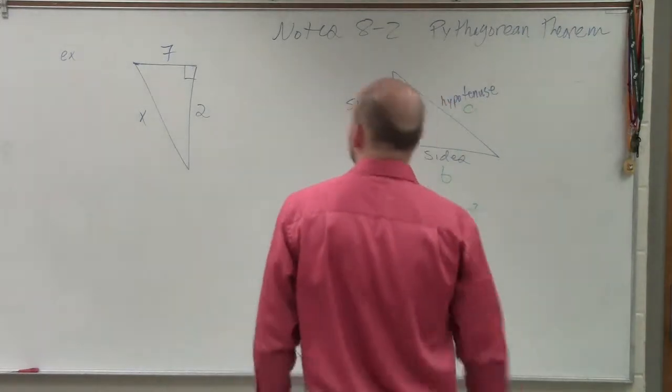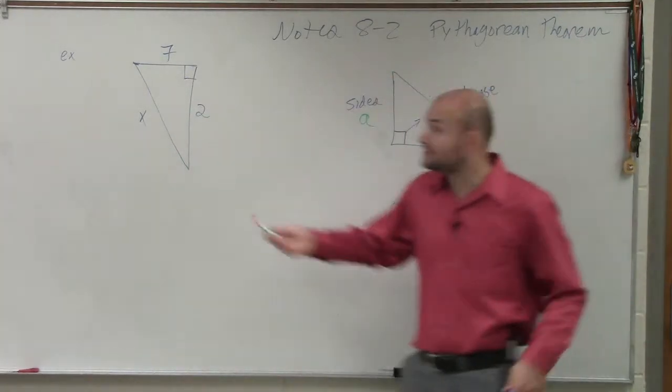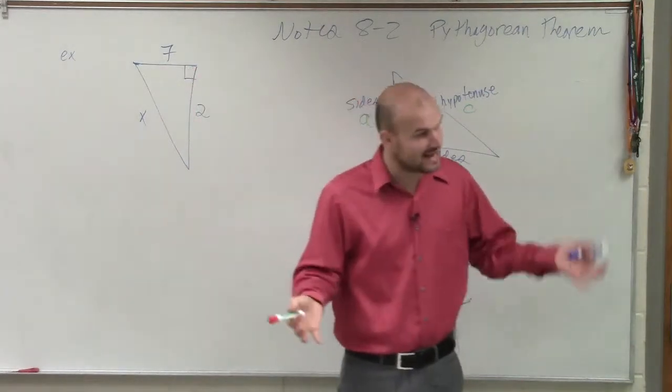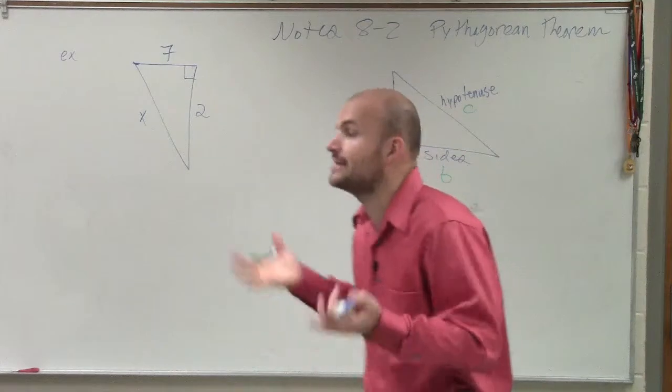OK, so what we have is we have a triangle. It's not written just like this one. However, we do notice that it has a right angle. So therefore, I know it's a right triangle. And since it's a right triangle, I know I can apply the Pythagorean theorem.